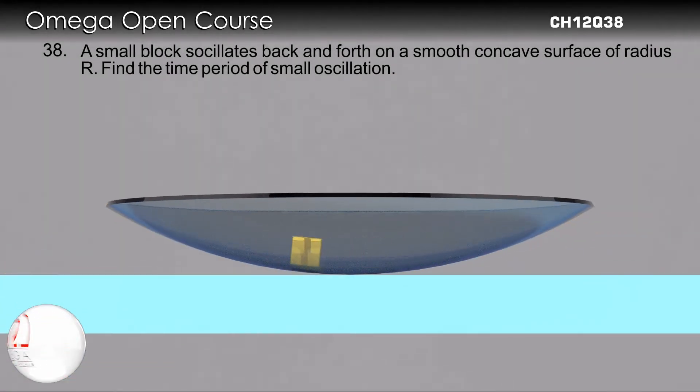A small block oscillates back and forth on a smooth concave surface of radius R. Find the time period of the small oscillation.